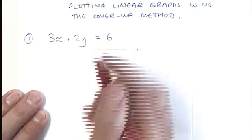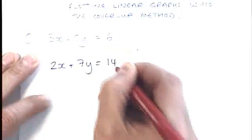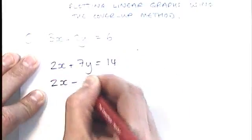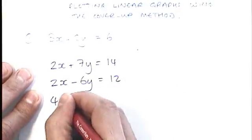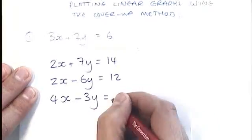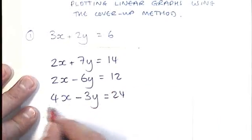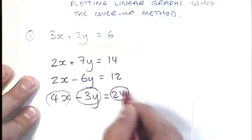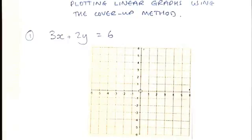If I were to just quickly come up with some more examples, anything like this, anything like this, 4x minus 3y equals 24. You could have anything where you've got some x's and then some y's equals a number. You could use the cover-up method and it's quite an effective way of working.